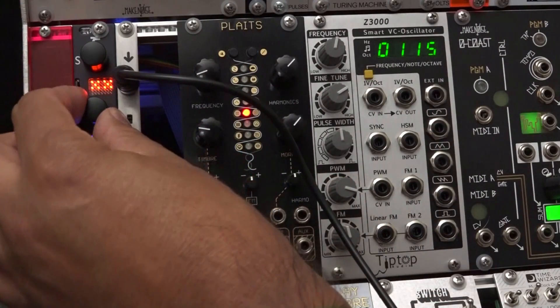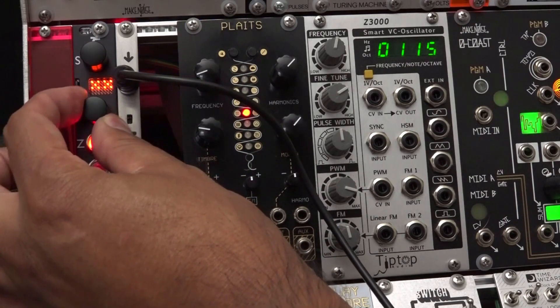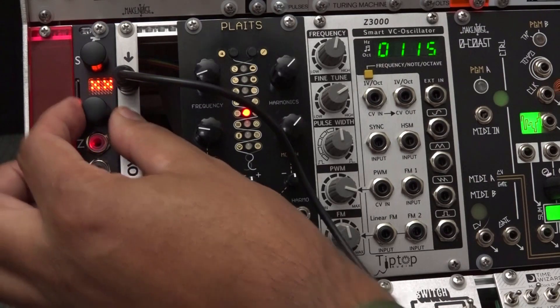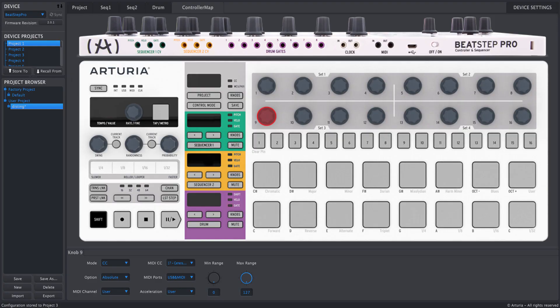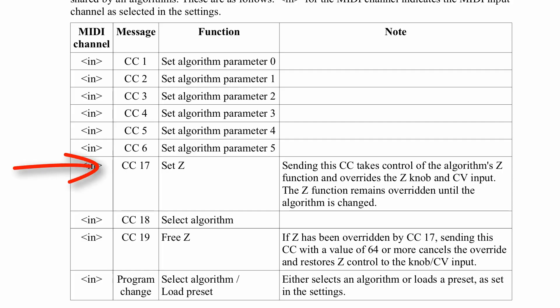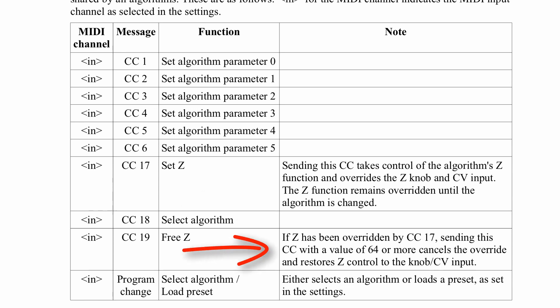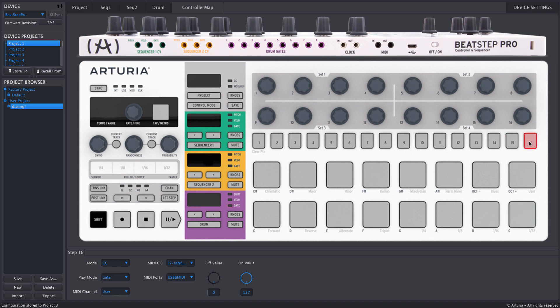This one-knob-per-parameter setup gets a lot more fun in an algorithm like F6, which is basically a Turing machine. For that algorithm, it's also useful to control the Z knob from the BeatStep Pro. I'll go back to the MCC and set encoder number 9 to send MIDI CC 17, which according to the Disting manual is the Z control. The manual also says that once you take control of the Z knob with MIDI, you can't use the physical Z knob again until you change algorithms or send a value of 64 or more on CC 19. So I'll set step 16 to send CC 19 with a value of 127 — that unlocks the physical Z knob.